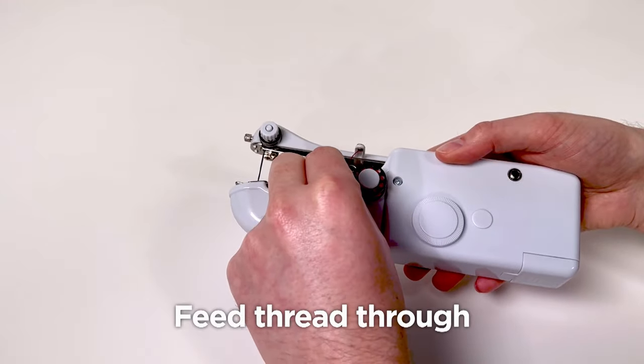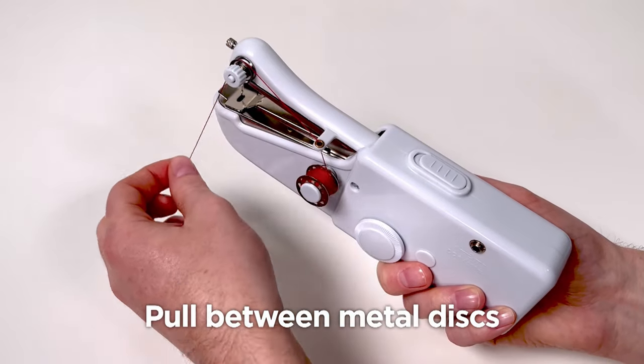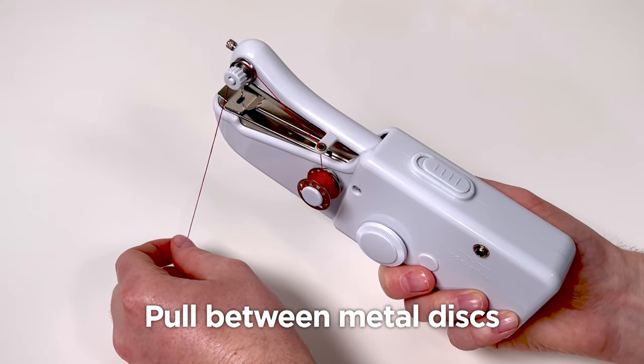Next, you will feed the end of your thread through the small hole located above the bobbin. Once you've passed your thread through, you'll need to feed it down the product towards the two metal discs.